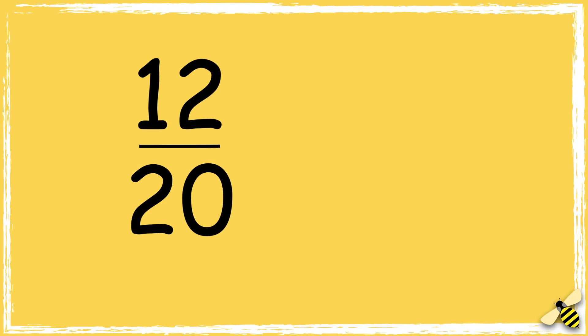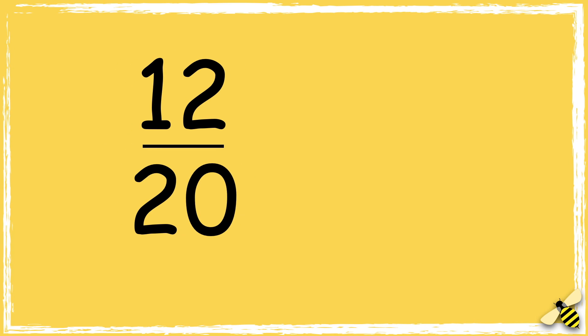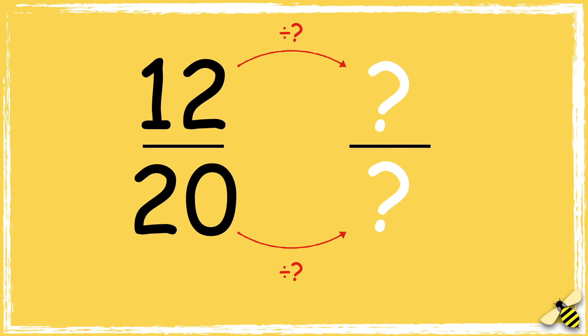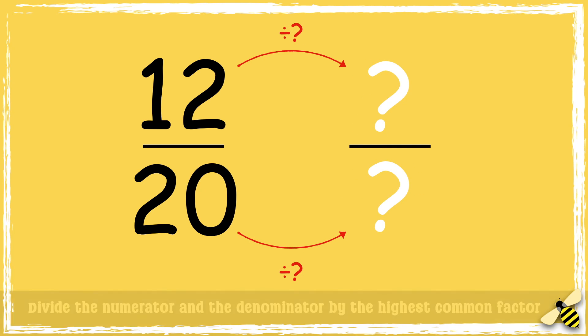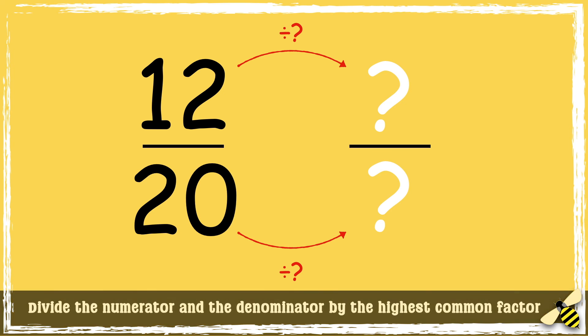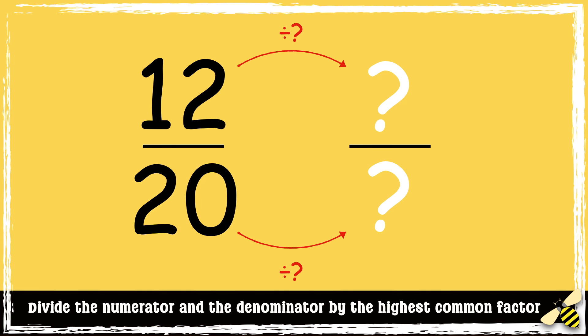Now it's your turn. Here is the fraction 12 20ths. Can you simplify this fraction? Remember, you need to divide the numerator and the denominator by the highest common factor. Let me know your answer in the comments section.